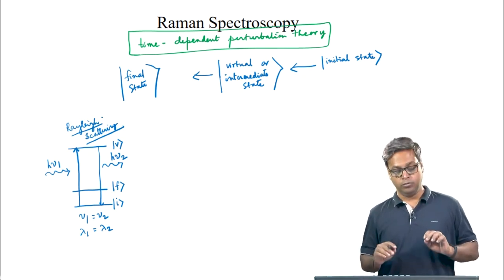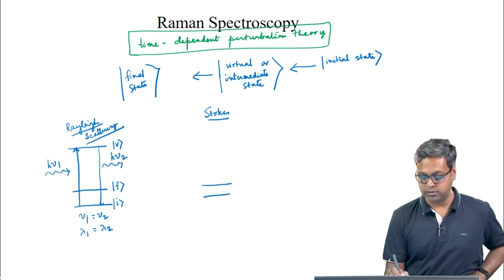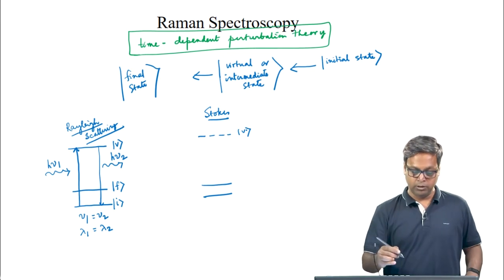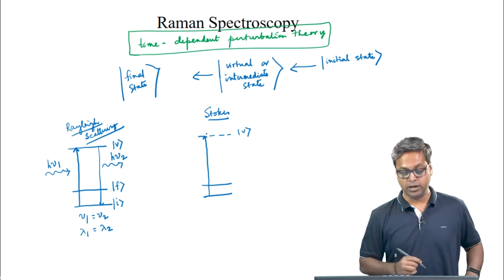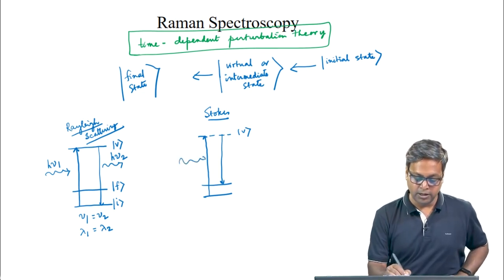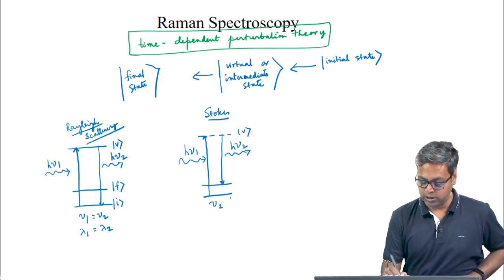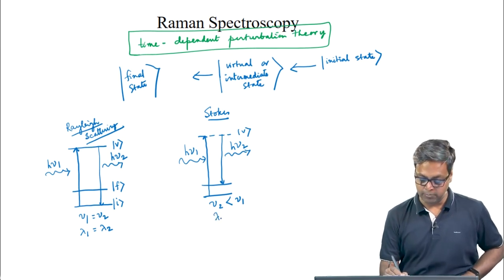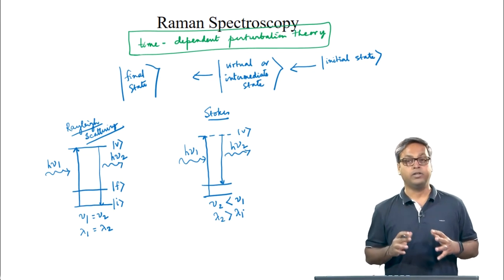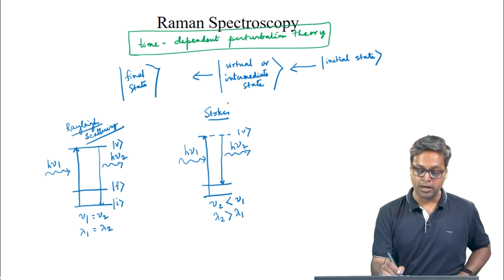For the Stokes lines, we have two stationary states and a non-stationary virtual state. The molecule goes from the lower state to the virtual state but comes back to the upper stationary state. The incident energy is hν₁ and the emitted energy is hν₂, so ν₂ < ν₁, meaning λ₂ > λ₁. The wavelength of the scattered light is longer compared to the incident light — this is how we get the Stokes lines.